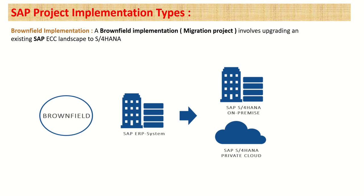The next type is the brownfield implementation, which we can also call a migration project. Here, the company is already using an SAP system — for example, SAP ECC — and they want to move to S/4HANA. Along with the existing configuration and custom code, they want to migrate and upgrade the system from ECC to S/4HANA. These types of projects are called brownfield or migration projects.